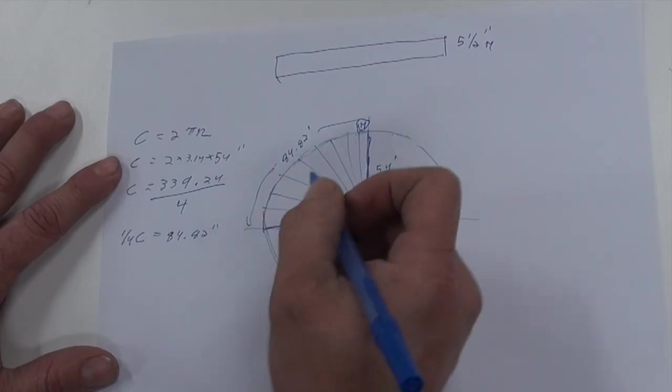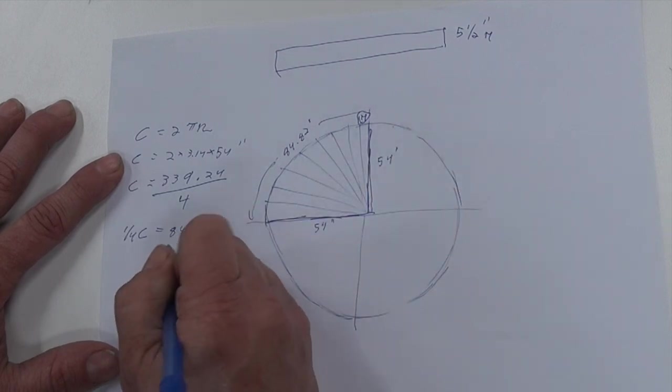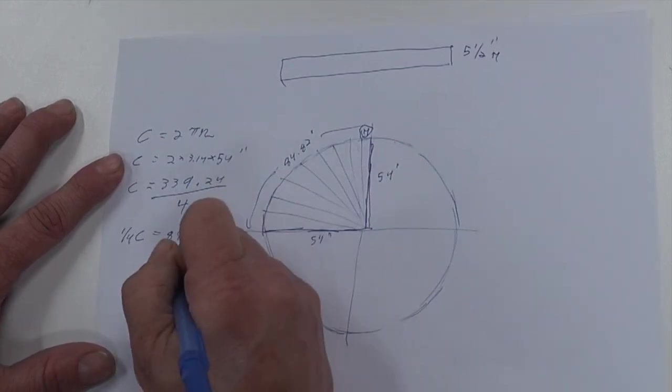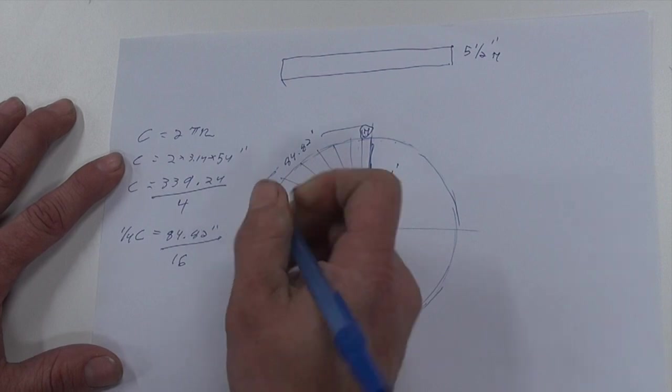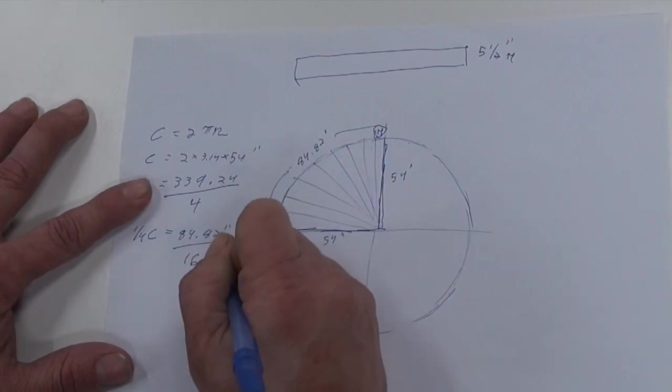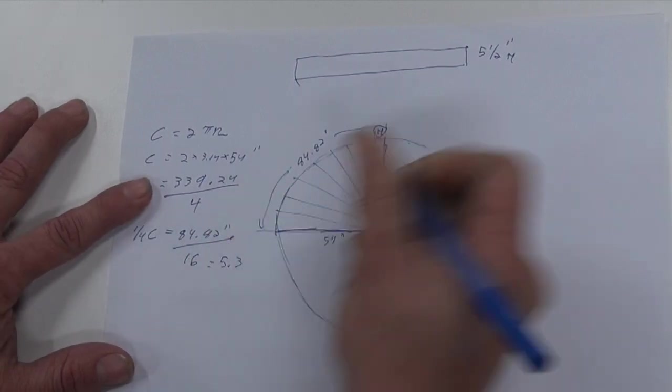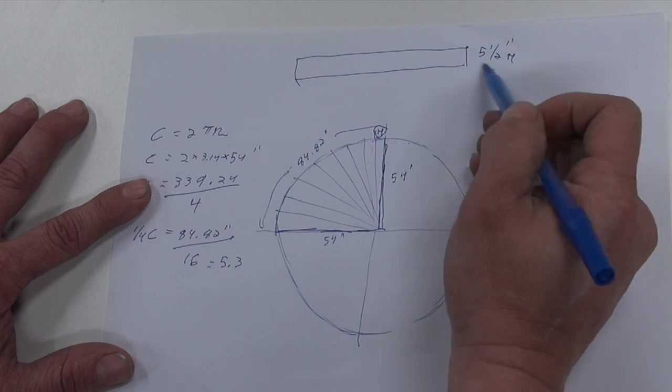Now we're going to approximate that. We're going to divide that by 16 segments. And then that will equal 5.3, which is just under the five and a half inch maximum.